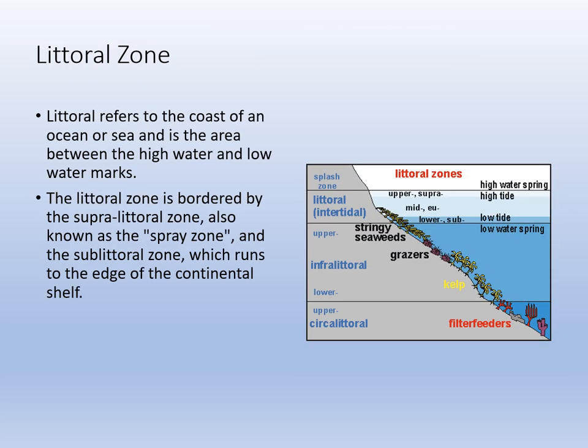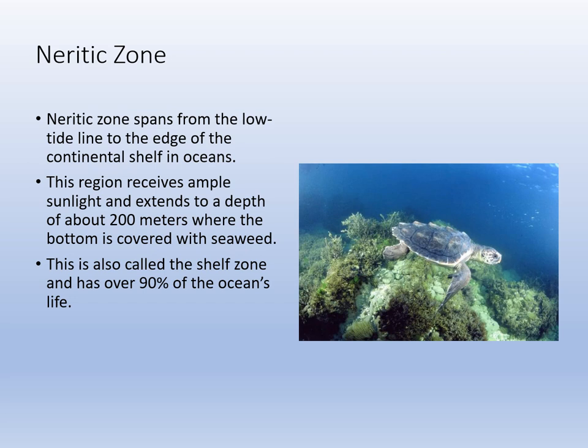Our littoral zone is intertidal — we study a lot of this in our class because we're pretty much tied to the shore. The neritic zone is the area where sunlight reaches the bottom over the continental shelf — very, very productive biologically. We're talking 90% of ocean life can be found in the littoral and neritic areas.